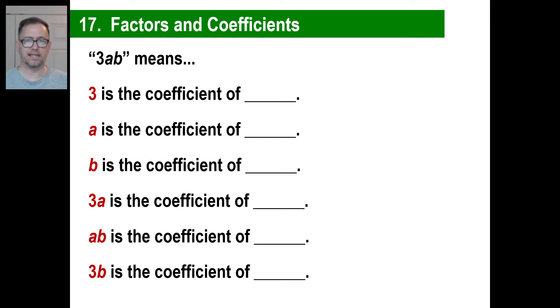Hey y'all, let's take a look at factors and coefficients. A coefficient basically is something that goes along with the other parts of a term. We'll talk about terms in a second. If you have 3ab, for example, that means 3 times a times b.